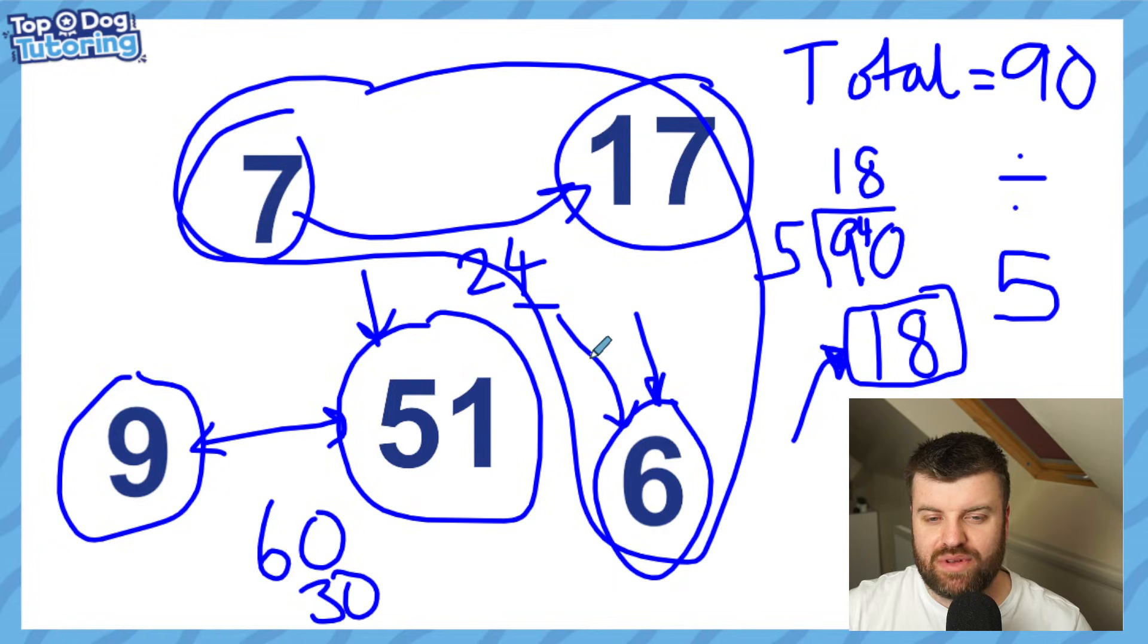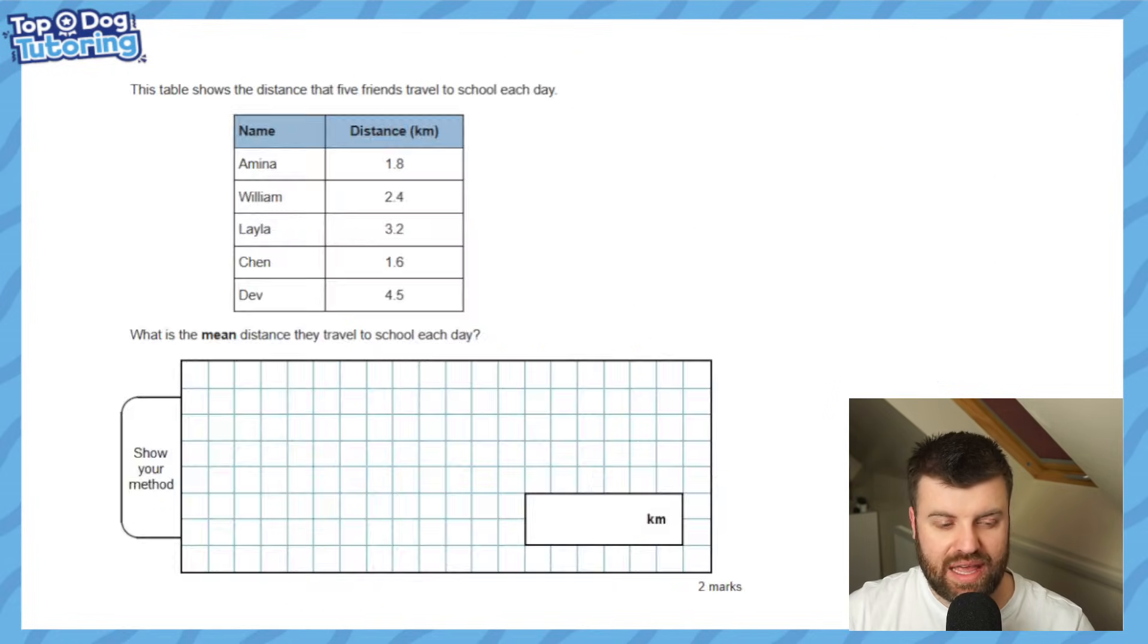In the SATs papers, we're very unlikely to see a question that just says here are some numbers, what's the average. It's going to be baked into a reasoning question just like this. This table shows the distance that five friends travel to school each day - Amina, William, Leila, Chen and Dev, and they all go a certain distance with a decimal in kilometers. What is the mean distance they travel to school each day?